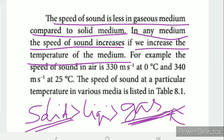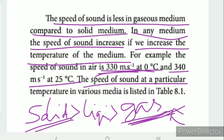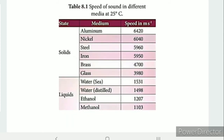The speed of sound in air is 330 metres per second at 0 degrees Celsius. The speed of sound at various temperatures in various media is listed in Table 8.1, covering solids, liquids, and gases.